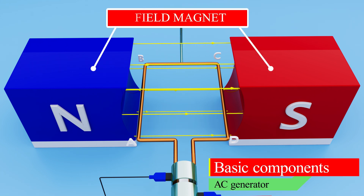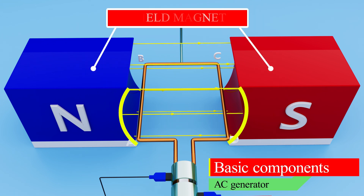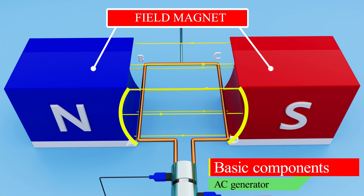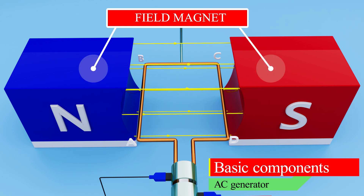The field magnet consists of two poles: north and south pole. Field magnets are concave and cylindrical in shape and therefore produce a radial magnetic field. The direction of the magnetic field is from north to south pole.